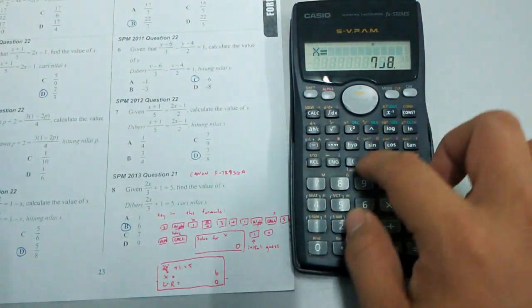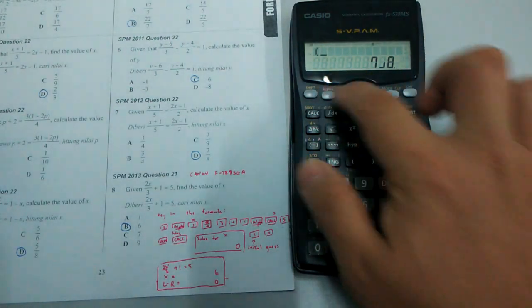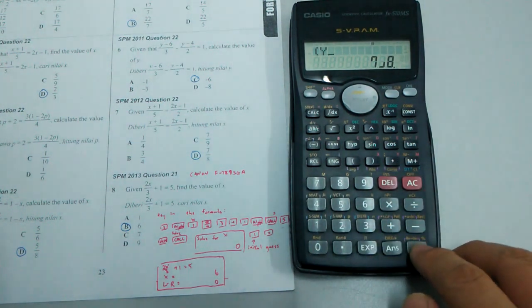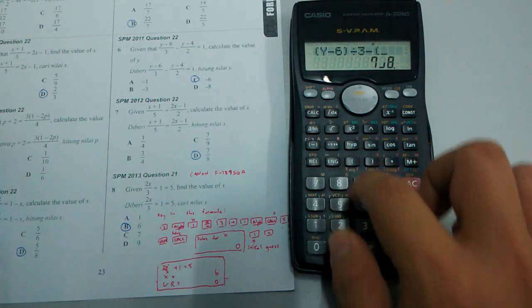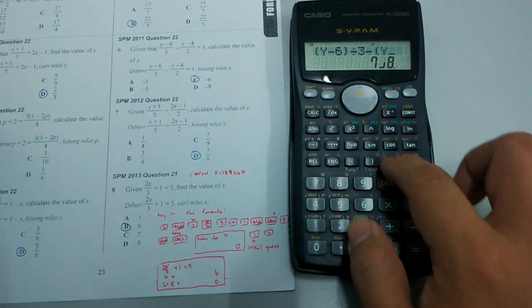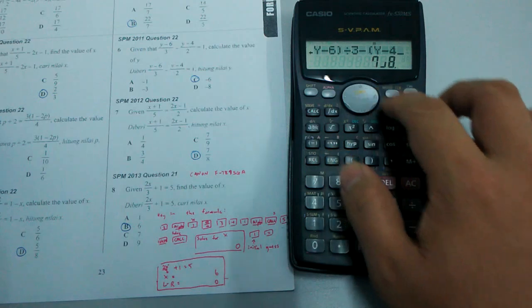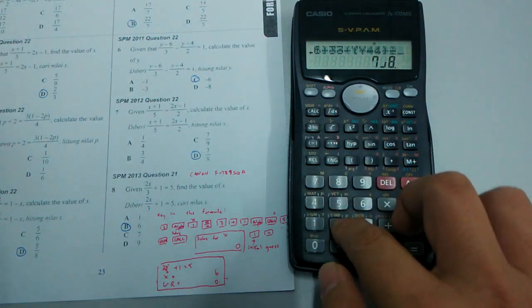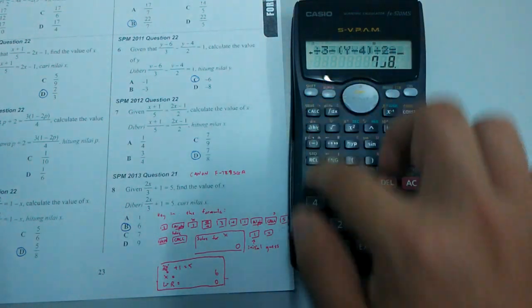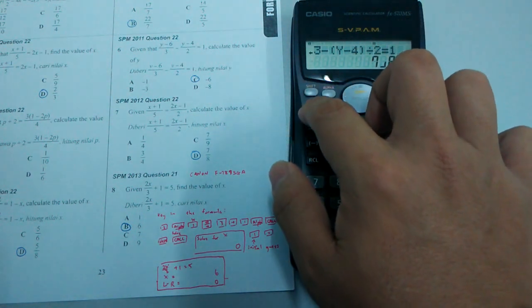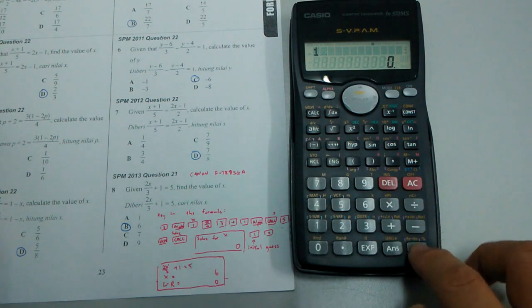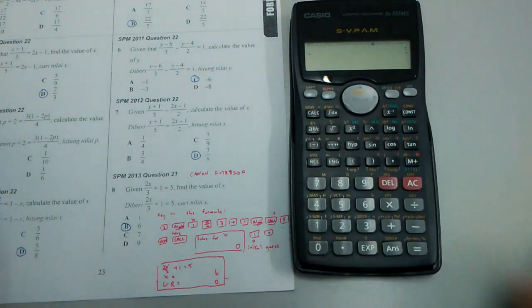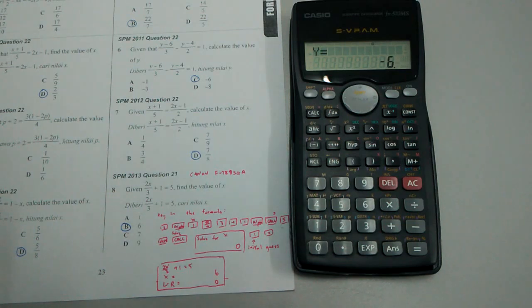I enter alpha Y minus 6 divided by 3, minus alpha Y minus 4 divided by 2, equals 1, then shift solve. I put in initial guess 1, press shift solve, and the calculator returns negative 6.